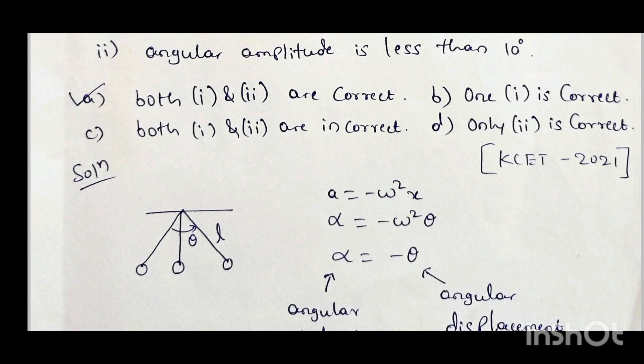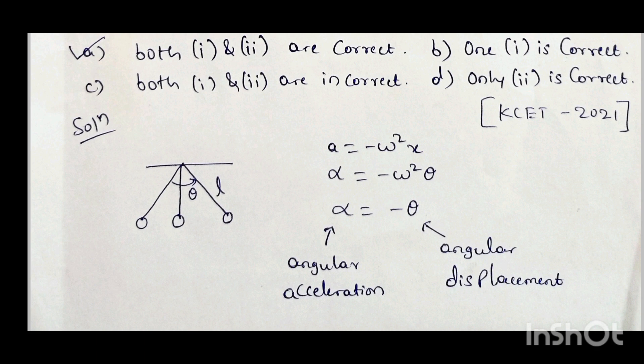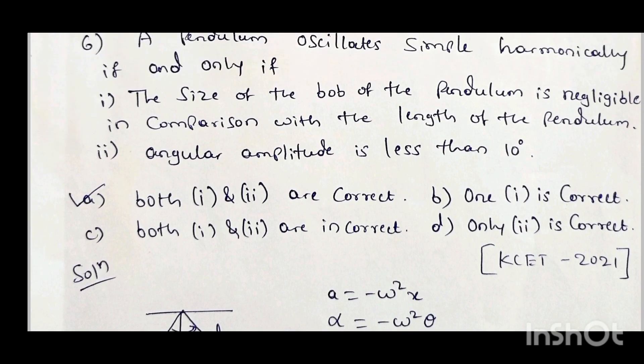For SHM in a pendulum, we apply a force to the bob and observe angular displacement. The angular acceleration α = −ω²θ, where θ is the angular displacement, so α is directly proportional to θ. This requires both conditions: the bob size must be negligible compared to the length, and the angular amplitude must be small (less than 10 degrees). Therefore, the correct answer is option A — both 1 and 2 are correct.